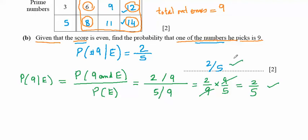So the conditional probability formula gives the same answer. The direct method is easier in this case. Both approaches confirm the answer is two over five.